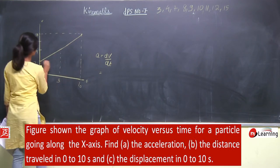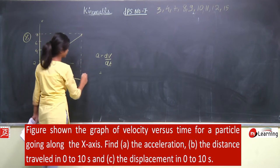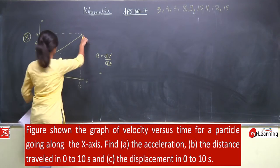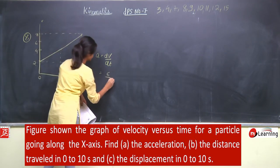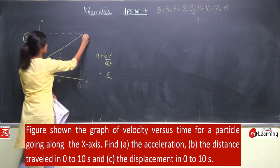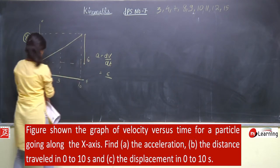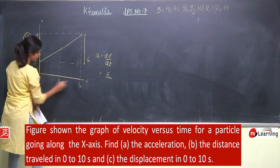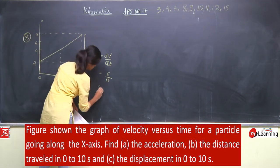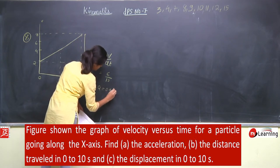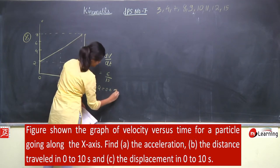तो इस graph का slope क्या हो जाएगा? y by x, मतलब 6 by 10. यह distance 6 होगा — 8 minus 2 equals 6 — और यह distance 10 होगा। तो acceleration is 0.6 meter per second square.